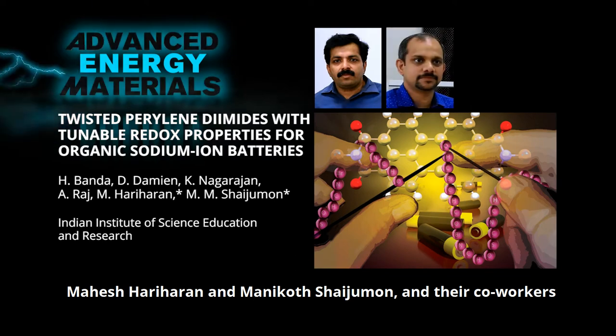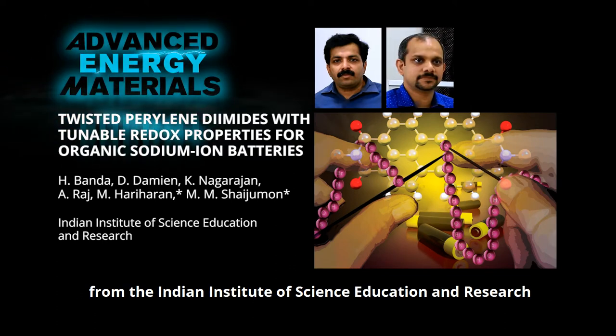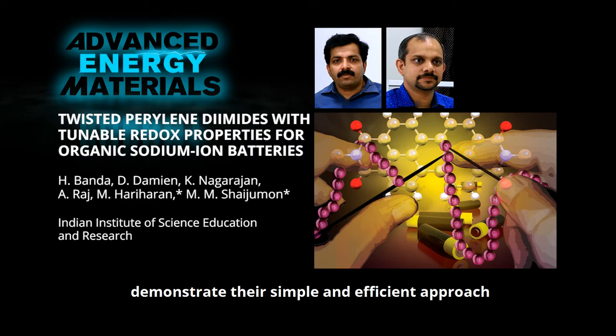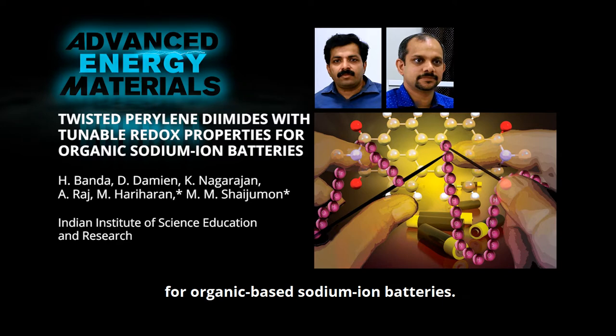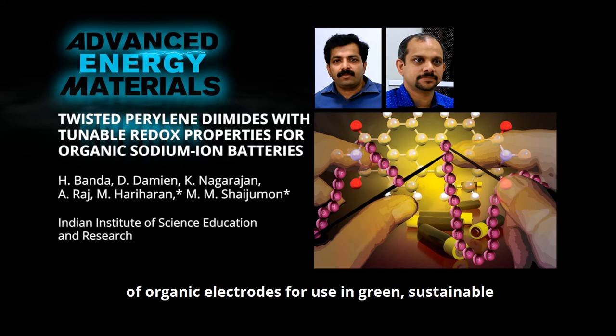Mahesh Hariharan and Manikoot Shaijumon and their co-workers from the Indian Institute of Science Education and Research demonstrate their simple and efficient approach to tune the redox properties of perylene diamides as high voltage cathodes for organic based sodium ion batteries. The results offer a new avenue to tailor the redox properties of organic electrodes for use in green sustainable electrochemical storage devices.